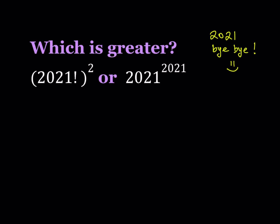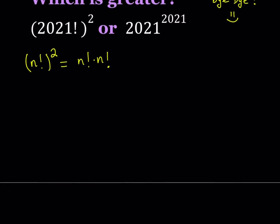We're going to write n factorial squared as n factorial times n factorial. Now, n factorial obviously means the product of all positive integers 1 through n, but we can write it in two different ways — ascending and descending. One is 1 times 2 times dot dot dot all the way up to n, and the other is descending: n, then n minus 1, dot dot dot, 3, 2, 1.